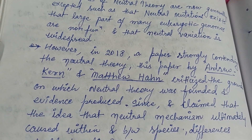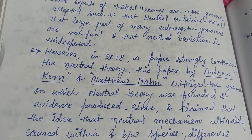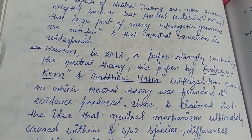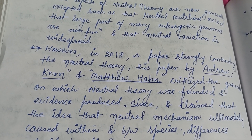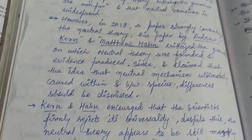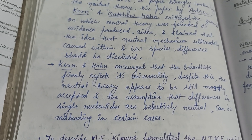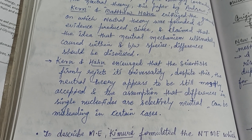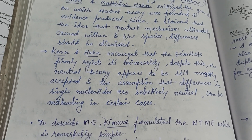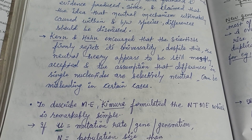Basically, the Neutral Theory suggests that changes at the molecular level in DNA are caused by random genetic drift and not by natural selection. Regarding this, researchers such as Kern and Han argue that scientists firmly reject its universality.